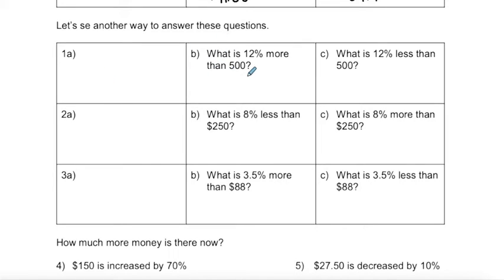So in this case, I might figure out what this means. My original value is 100%. And I want 12% more than that.